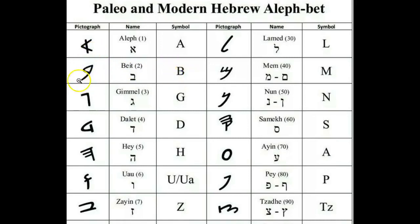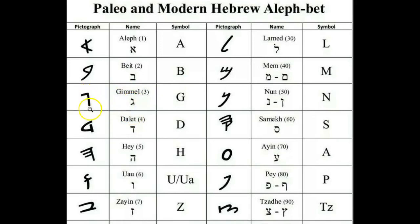The Bath represents a house, because each letter pictographically stands for a picture. Then we have the Gam, or Gimel, right here — this is how it looks in the modern Hebrew and in the ancient Paleo-Hebrew — which represents foot or camel and makes the G sound.